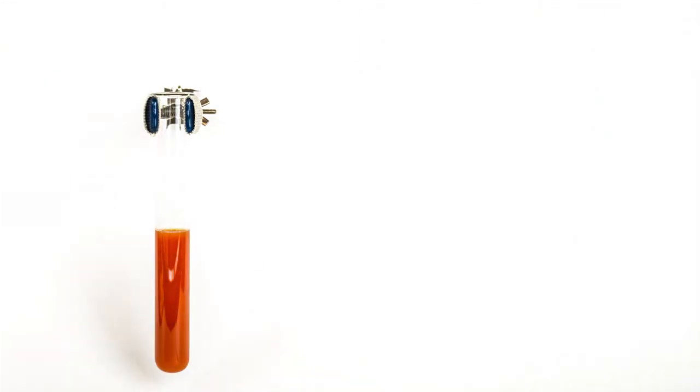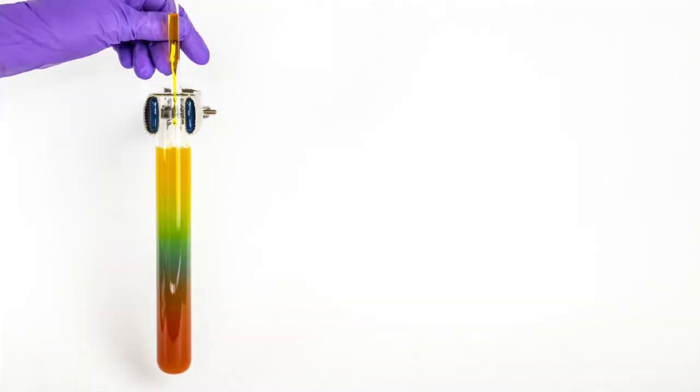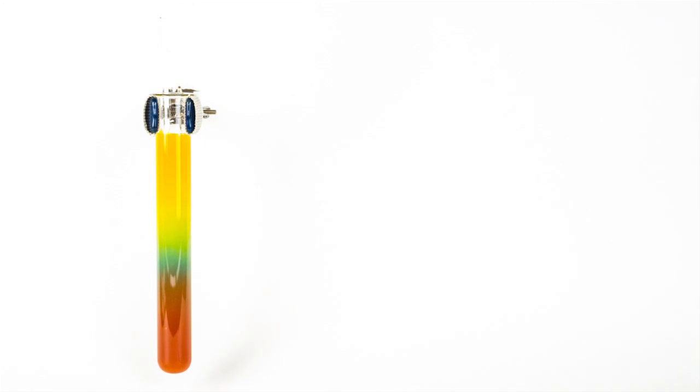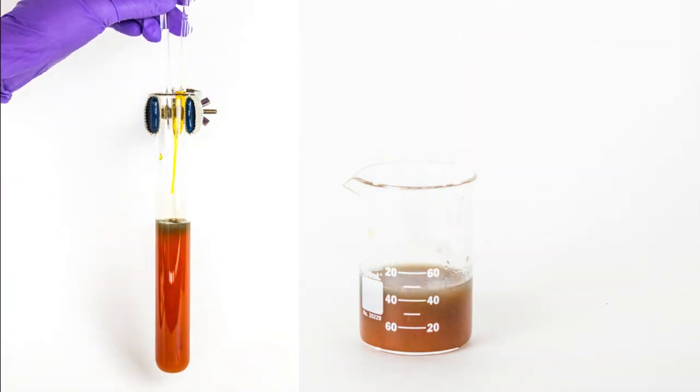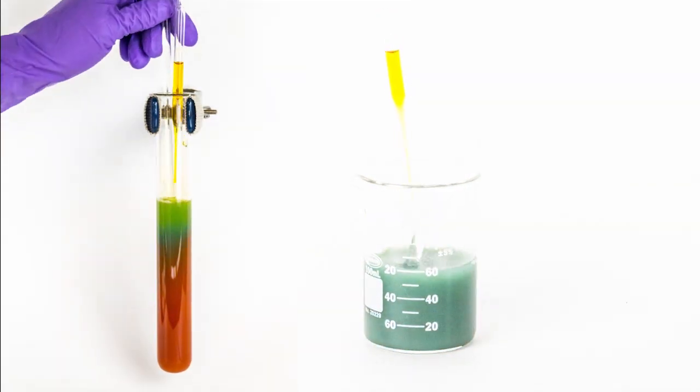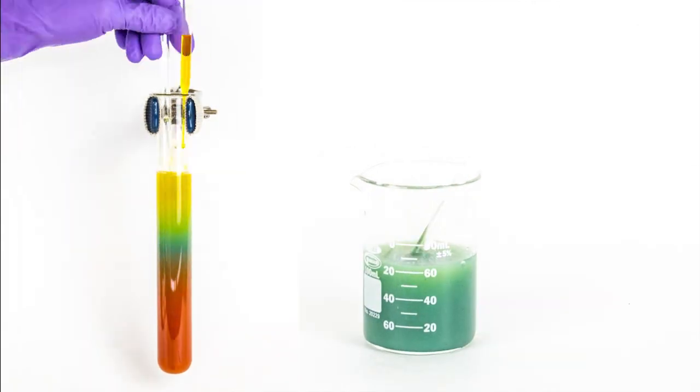Because tomato juice is so thick, it helps the reaction last much longer. The long and narrow test tube keeps the colors separated longer by maintaining a steep density gradient. If we compare it to a shallow beaker, the colors mix rapidly to look more like a tomato juice swamp.